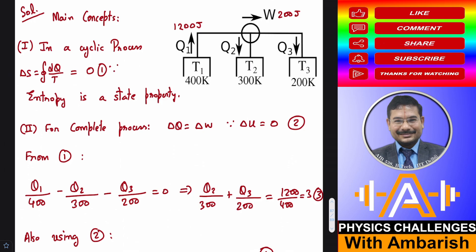And I know that when I get back to the initial configuration, the total integral DQ by T in the cycle as a whole must be zero. So that's the first idea that I'm going to use. And of course, for a complete cyclic process, you know that since internal energy is also a state property.